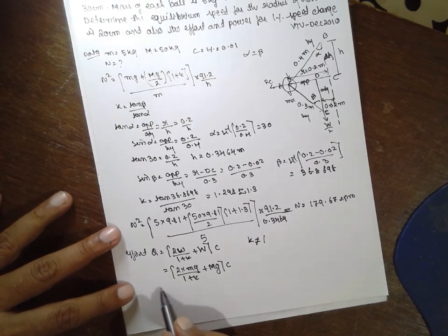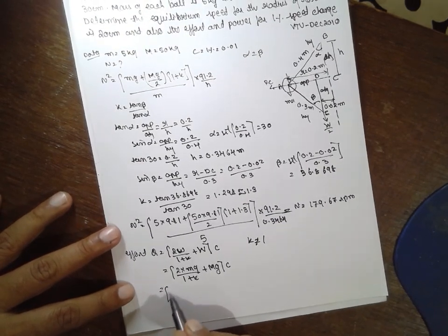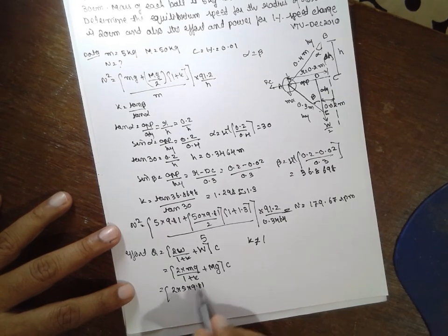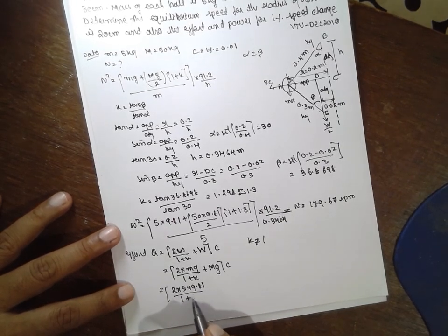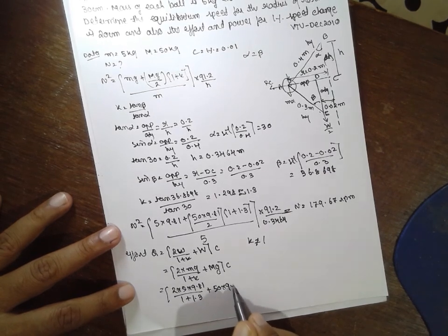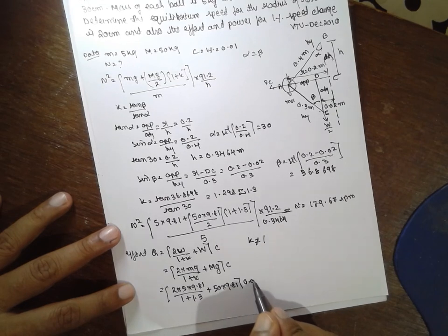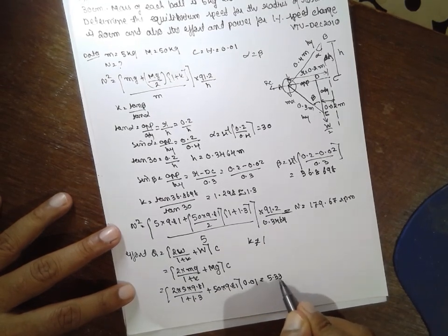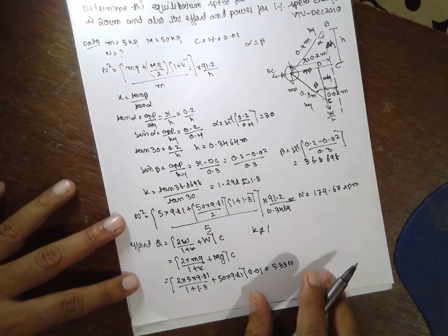Substitute the value 2 into 5 into 9.81 divided by 1 plus 1.3 plus 50 into 9.81 into 0.01. The answer will be 5.33 newton. Next, governing power.